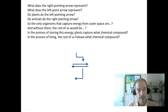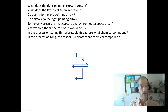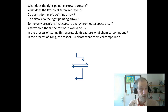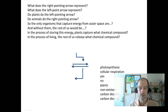In the process of storing this energy, plants capture two chemical compounds: carbon dioxide and water. In the process of living, the rest of us release two chemical compounds — wait for it — carbon dioxide and water. And that arrow here represents energy being released through cellular respiration. We can use that energy to keep us warm and do the things our body needs to do, but eventually it goes off out of us. Study those — the answers to these questions are right here. You can pause it and write them down.